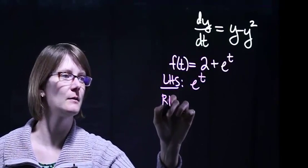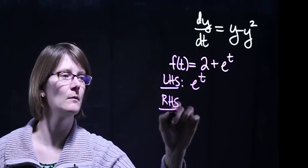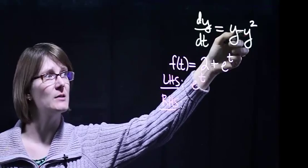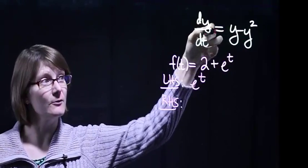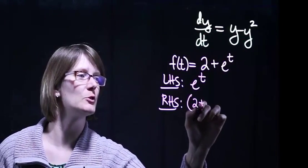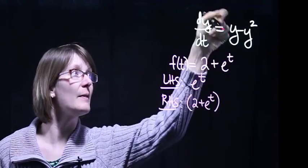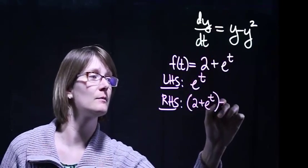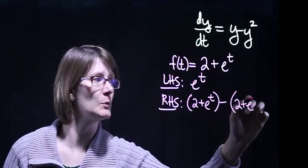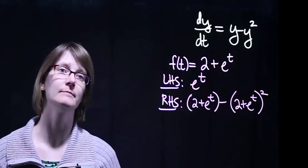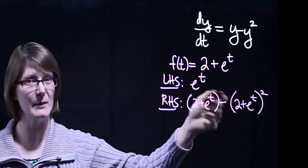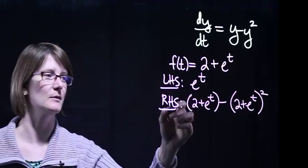Now let's look at the right-hand side. We've got y minus y squared, so that means take your function — that's 2 plus e to the t — and then subtract the square of your function, which is 2 plus e to the t, all squared. Now we've got to do a little bit of algebra; that's all this is, no more calculus.